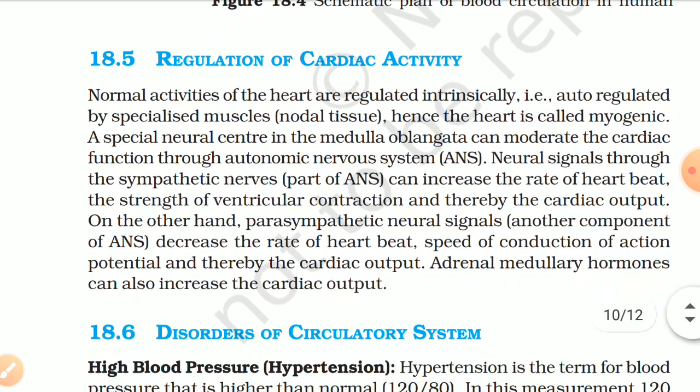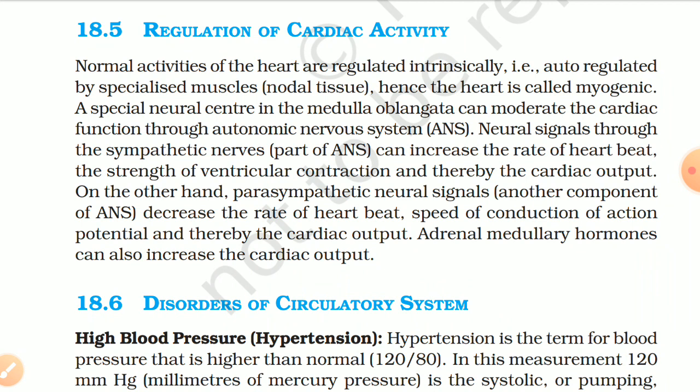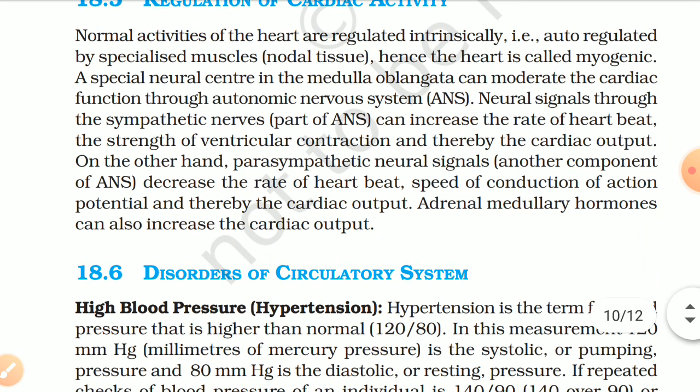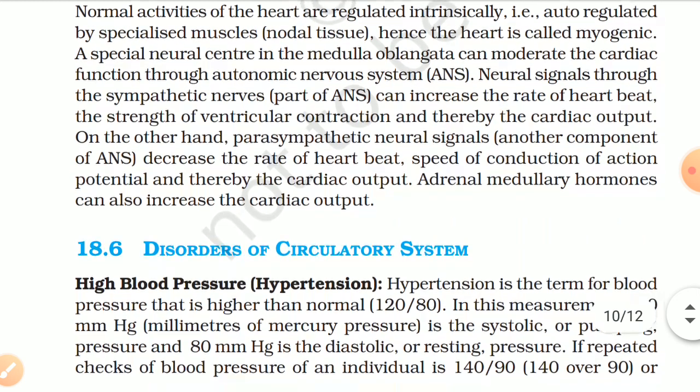18.5 Regulation of Cardiac Activity. Normal activities of the heart are regulated intrinsically — auto-regulated by specialised nodal tissues — hence the heart is called myogenic. A special neural centre in the medulla oblongata can moderate cardiac function through the autonomic nervous system (ANS). Sympathetic nerve signals can increase the rate of heartbeat, the strength of ventricular contraction, and thereby the cardiac output. On the other hand, parasympathetic neural signals decrease the rate of heartbeat, speed of conduction of action potential, and thereby cardiac output. Adrenal medullary hormones can also increase cardiac output.